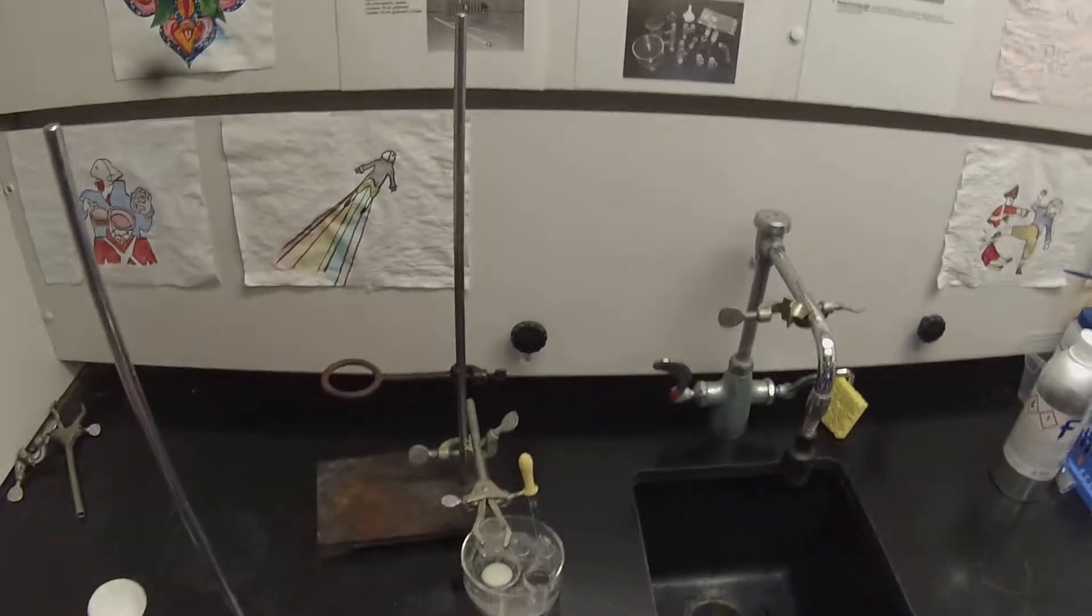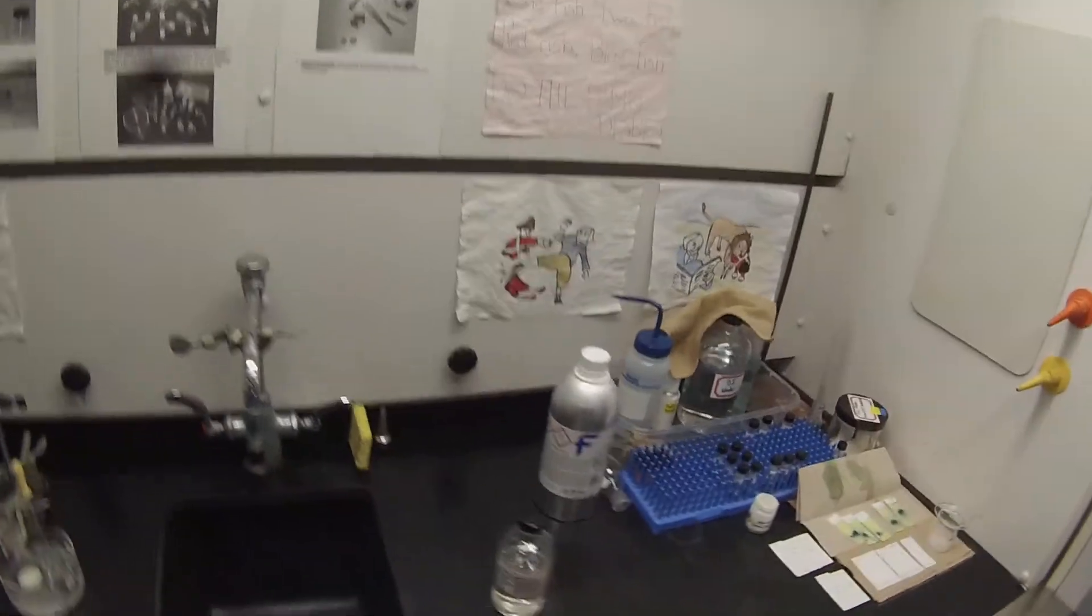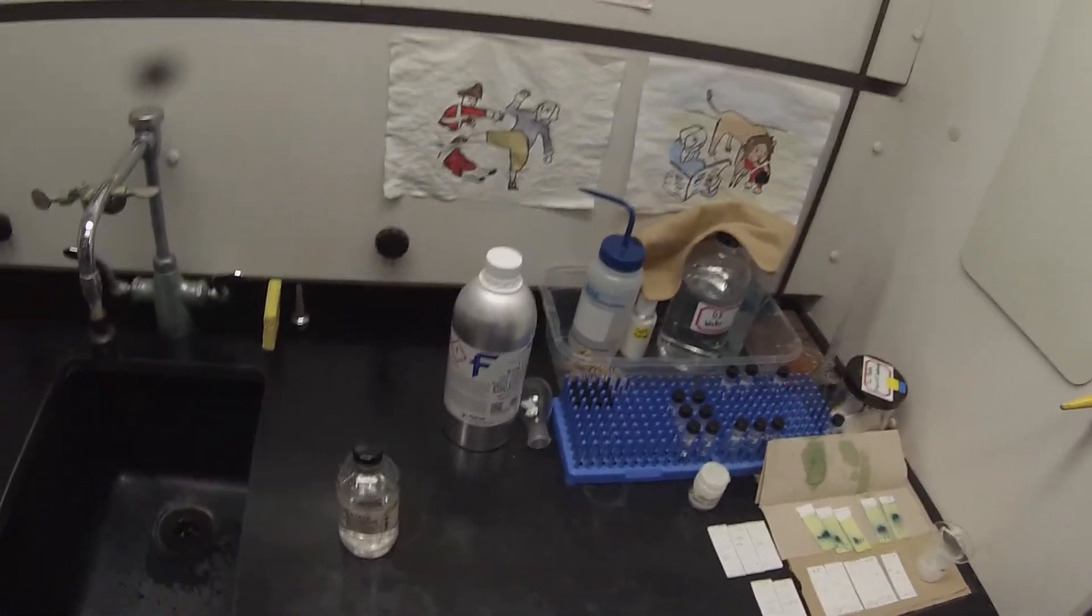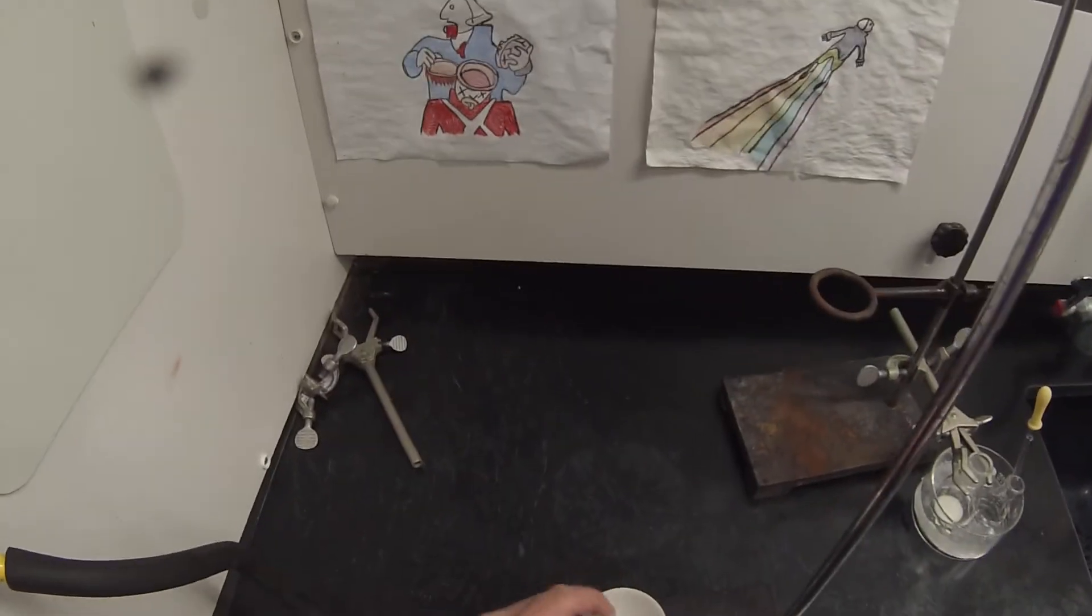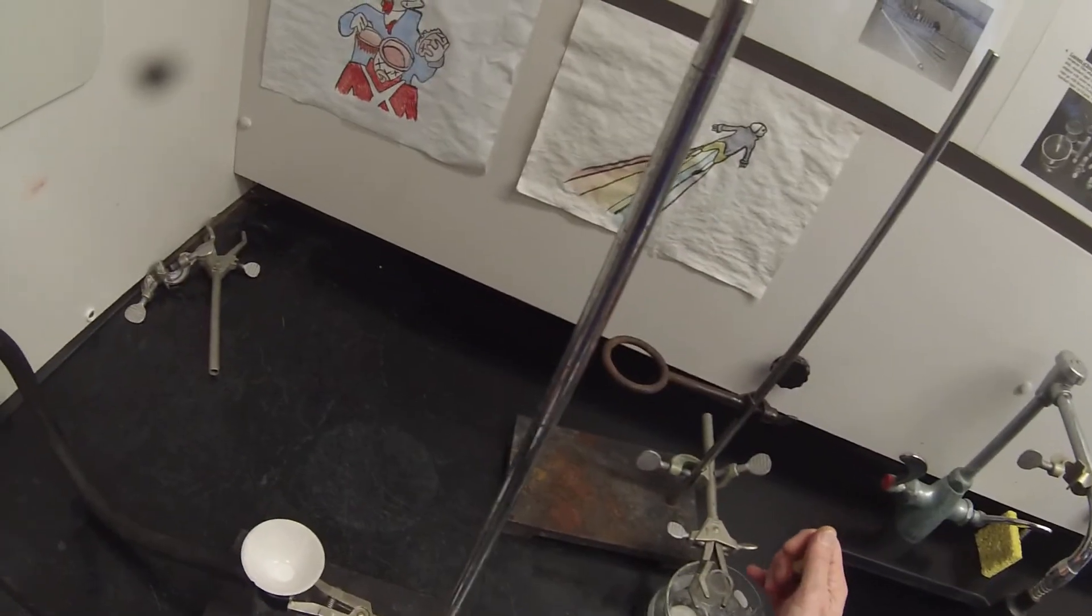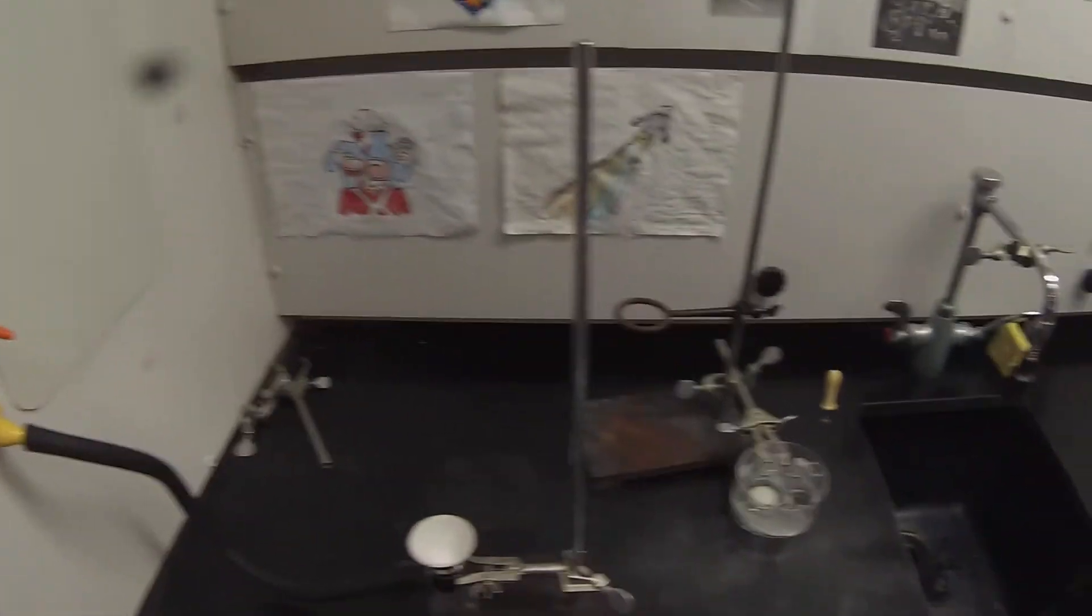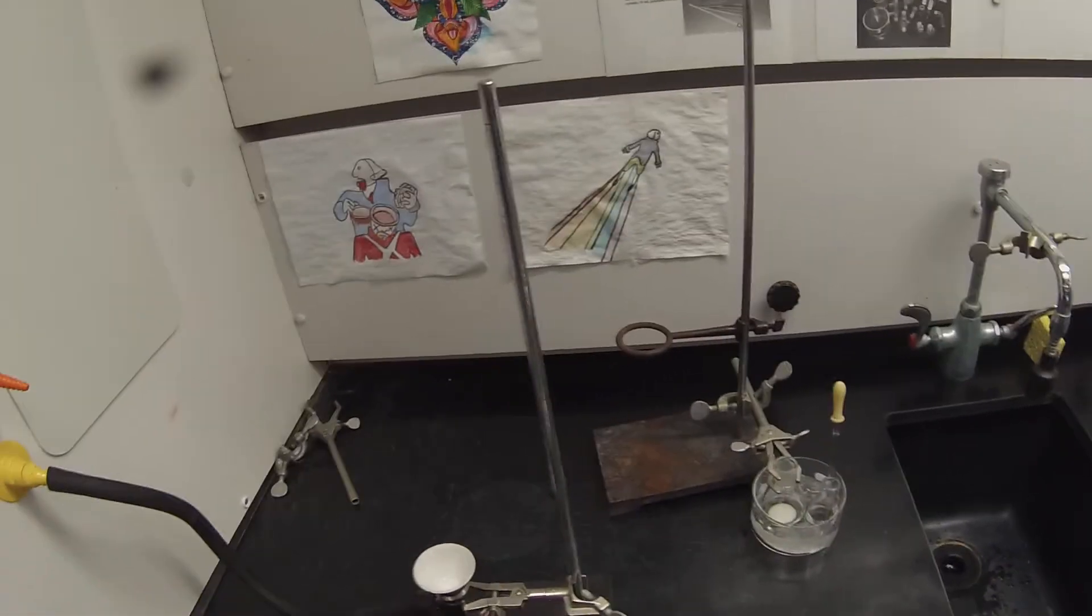We'll just let that cool, it won't take very long. Let the ethyl acetate evaporate. Since the NMR is down right now, we won't actually be collecting NMR data for a while, so we'll just let this stuff dry so we can calculate a yield. While we're waiting, I'm going to get a 10 milliliter beaker with a label on it.